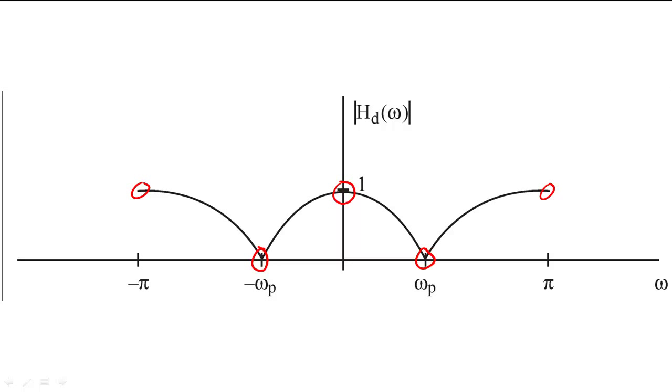If the zeros were not on the unit circle, then the frequency response would not go to zero on the unit circle, but the frequency response would simply be attenuated.